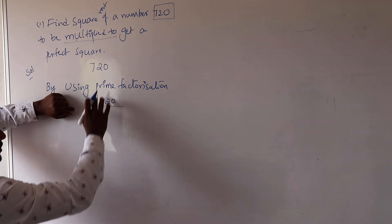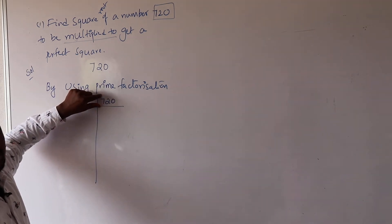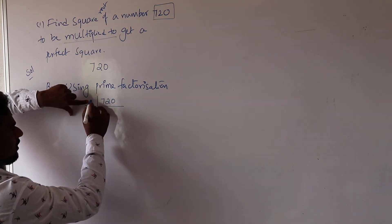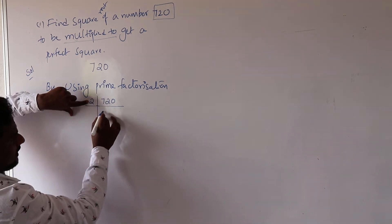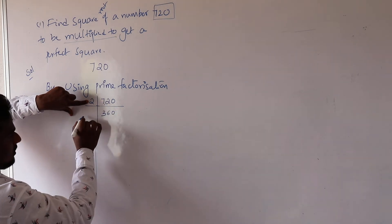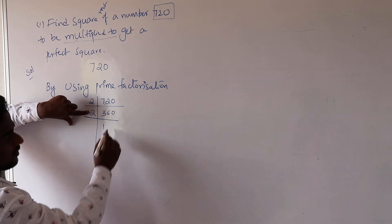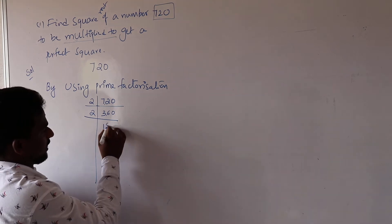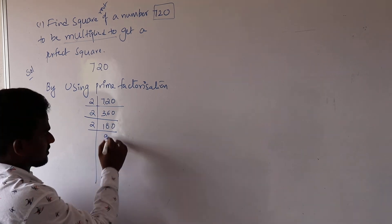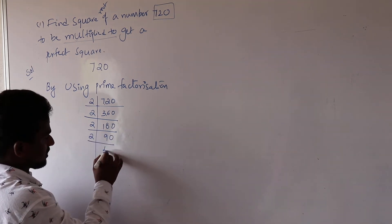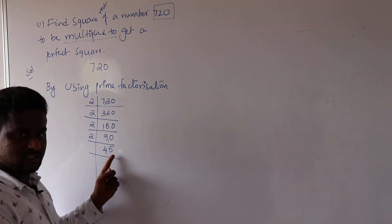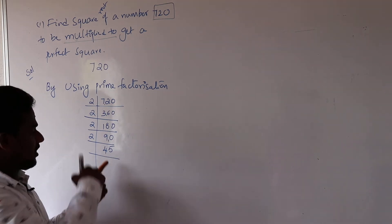We want to divide this number by the smallest prime number, which is 2. Dividing 720 by 2 repeatedly: 720 ÷ 2 = 360, 360 ÷ 2 = 180, 180 ÷ 2 = 90, 90 ÷ 2 = 45. Now 45 has 5 at the units place, so it is not divisible by 2. We move to the next prime number.